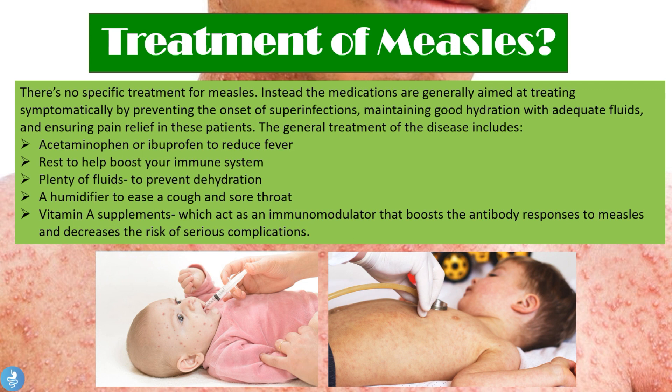There is no specific treatment for measles. Instead, medications are generally aimed at treating symptoms, preventing superinfections, and maintaining good hydration. General treatment includes acetaminophen or ibuprofen to reduce fever, rest to boost the immune system, plenty of fluids to prevent dehydration, a humidifier to ease cough and sore throat, and vitamin A supplements, which act as an immunomodulator that boosts the antibody response to the measles virus and decreases the risk of serious complications.